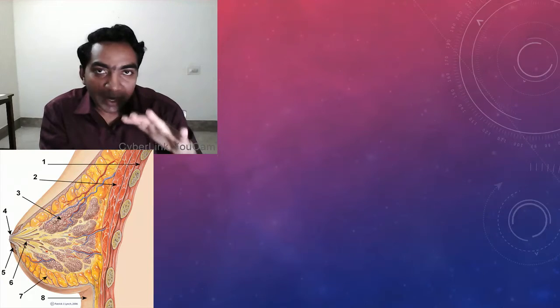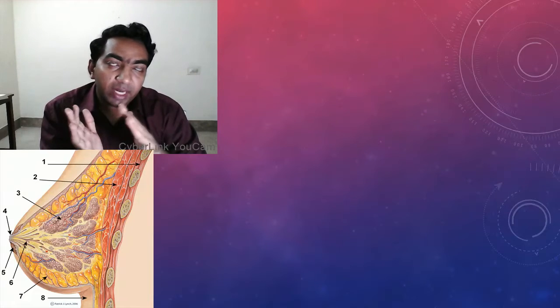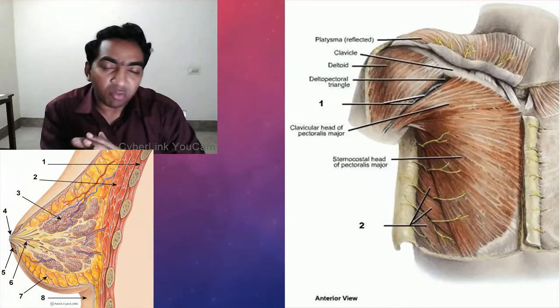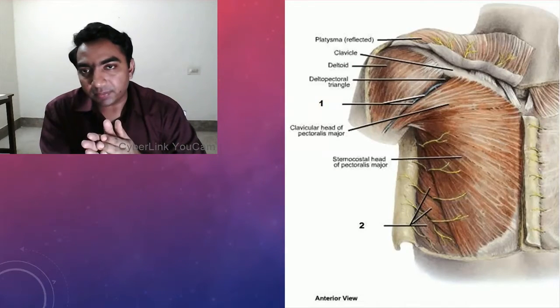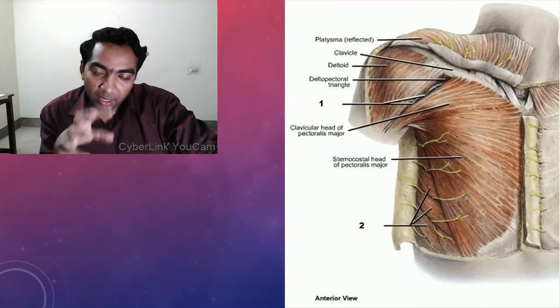Coming to where the breast lies — it lies over the pectoralis major muscle, between the dermis of the skin and the pectoral fascia. Between the breast and the pectoral fascia there is a space called the retromammary space, which contains some lymphatics and small blood vessels. In this picture we can see the position of the breast.